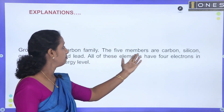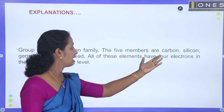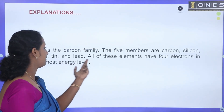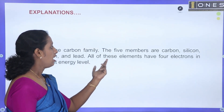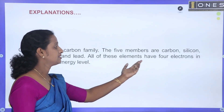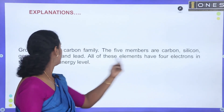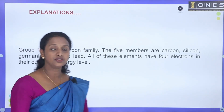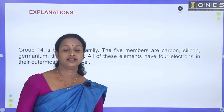The five members are carbon, silicon, germanium, tin and lead. All these have four electrons in the outermost energy level.